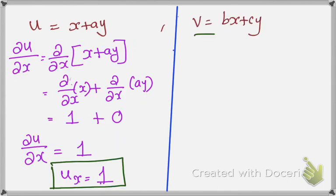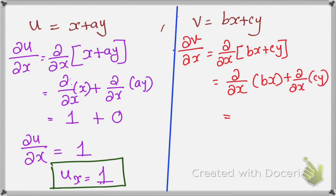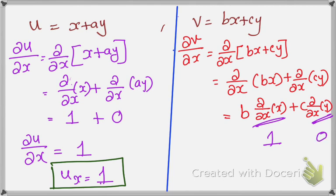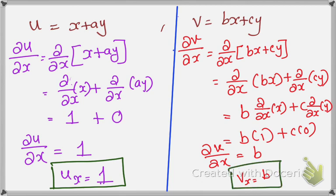Next, we differentiate v with respect to x — that is ∂v/∂x. Your v term is bx + cy. Splitting: ∂/∂x of bx gives b·1 = b, and ∂/∂x of cy gives c·0 = 0 since there is no x term. So ∂v/∂x = b. Therefore vx = b.